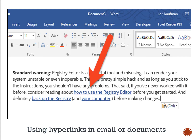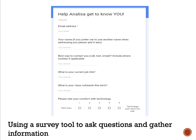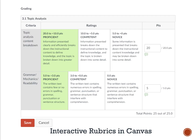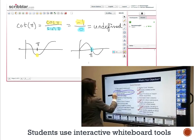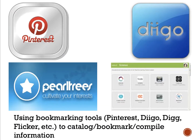Some examples of augmentation are using hyperlinks in emails or documents, using text-to-speech to read or write, using a survey tool to ask questions and gather information, using interactive rubrics in Canvas for students and for grading, using interactive whiteboard tools, creating presentations using PowerPoint, Pages, Prezi, Sway, etc., and using bookmarking tools such as Pinterest, Digg, or Flickr to catalog, bookmark, or compile information.